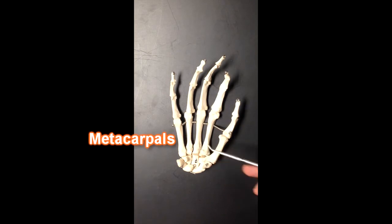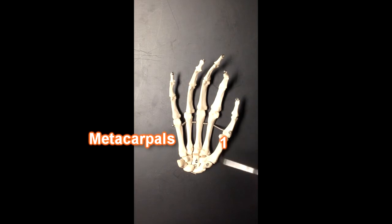We then have the metacarpal bones, and the metacarpal bones are just named metacarpal number one starting with the thumb, metacarpal number one, metacarpal number two, number three, number four, and number five.